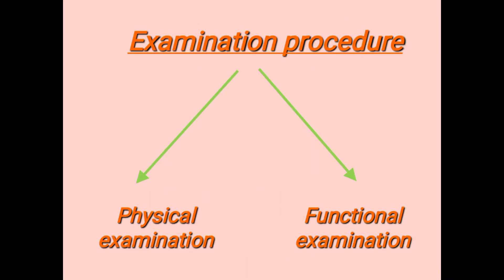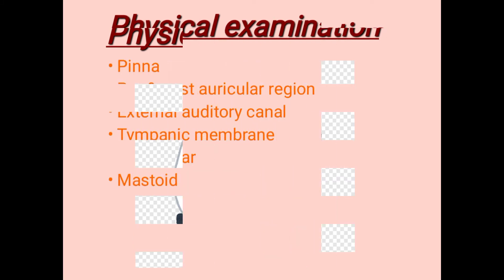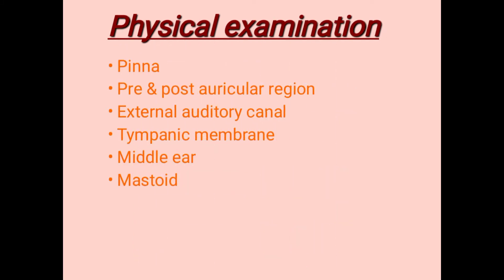The examination procedure can be done by two methods: physical examination and functional examination. Physical examination includes the pinna, pre- and post-auricular region, external auditory canal, tympanic membrane, middle ear, and mastoid process.